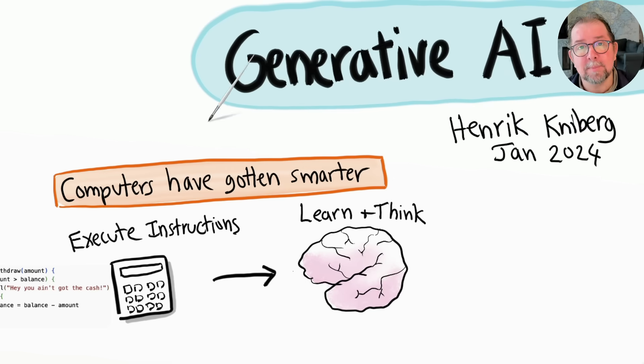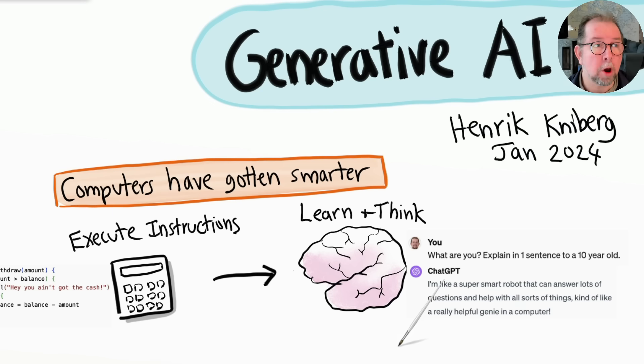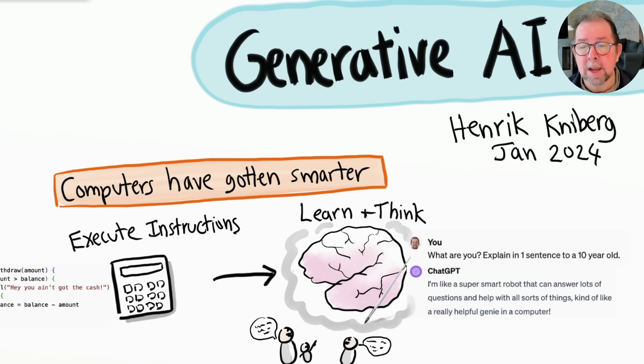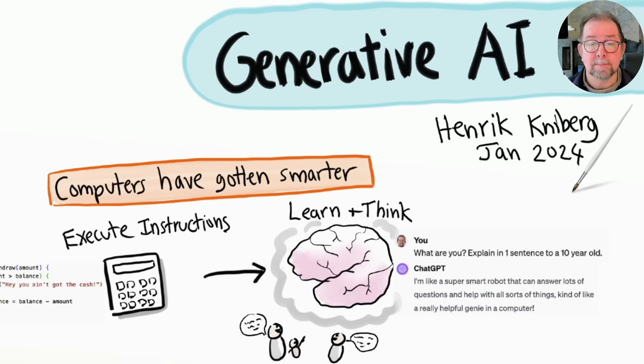We call this technology generative AI, and you may have encountered it already through products like ChatGPT. Basically, intelligence is now available as a service, kind of like a giant brain floating in the sky that anyone can talk to. It's not perfect, but it is surprisingly capable and improving at an exponential rate.